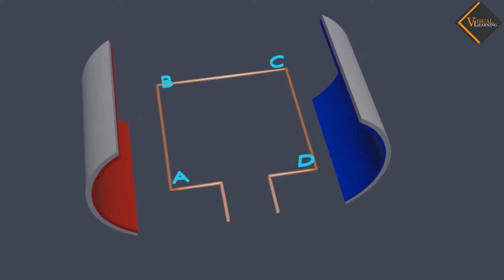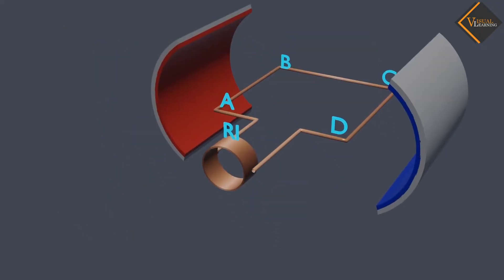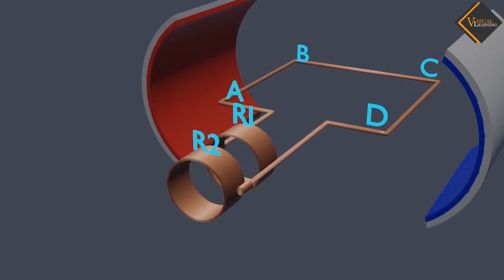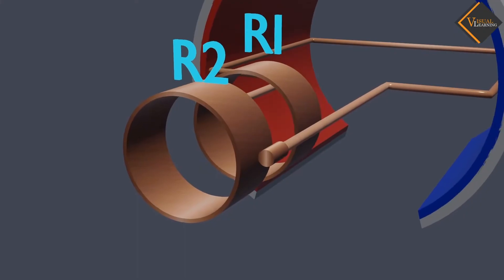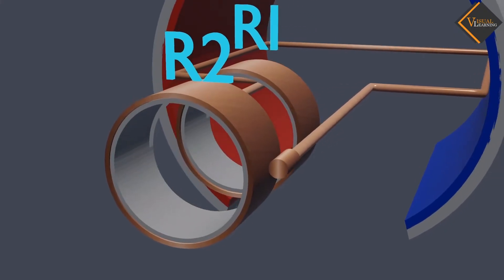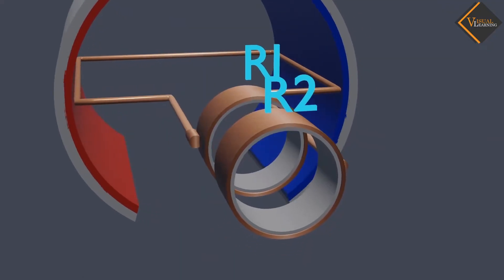The ends of this coil are connected to the two rings R1 and R2 respectively. The inner side of these rings are made insulated. Here, the insulated means current cannot pass through it.